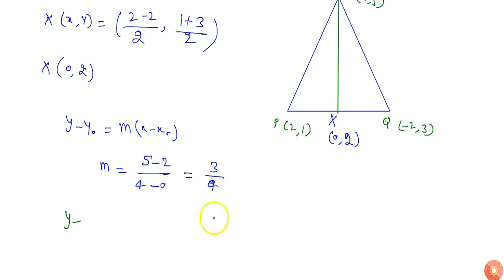So y minus... I am using the point (0,2), so y minus 2, m is 3/4, x minus 0. So our equation will be y minus 2 equals 3x by 4.